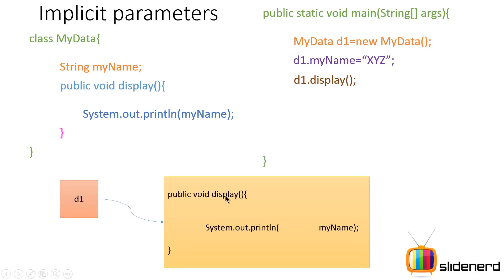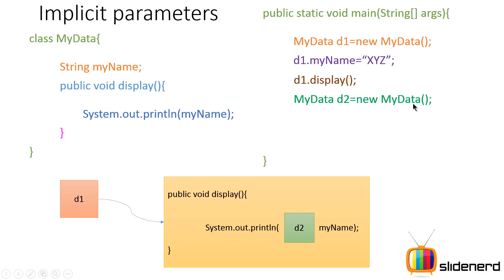When you say 'd1.display()', the display method simply prints the variable myName — but the myName of which object? Is it d1, d2, or d3? That is what implicit parameters are all about. When you say 'd1.display()', it is concerned with displaying the myName that belongs to object d1. Then I create 'MyData d2 = new MyData', set 'd2.myName = "ABC"'.